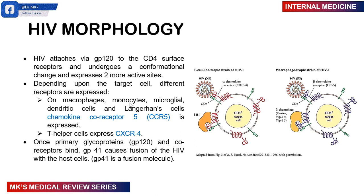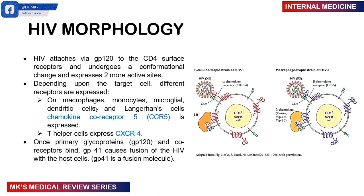Once glycoprotein 120 binds to the CD4 receptor, there can be fusion of the virus to the membrane of the host cell, facilitated by GP41. HIV is transmitted through contact of body fluids, especially blood, semen, vaginal secretions, breast milk, saliva to some extent, or even exudates from a wound or mucosal lesions that contain the HIV virus. Transmission is more likely if you have a higher number of virion particles within those body fluids. Even when the infection is asymptomatic during a primary infection, you can actually transmit HIV.